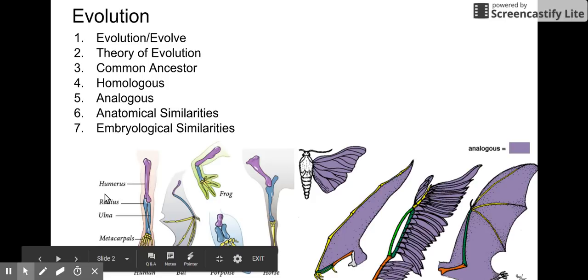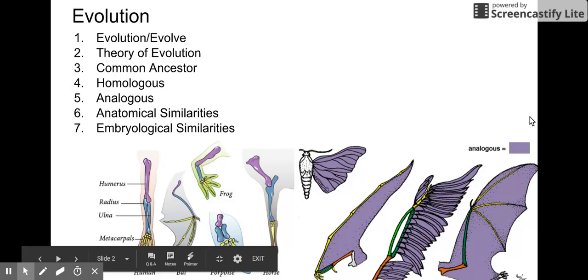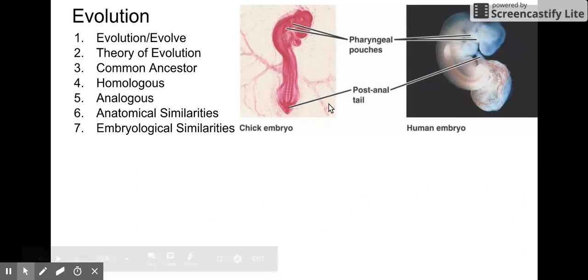Homologous structures, you're going to have that similar anatomy, and that similar anatomy is going to point to a common ancestor. So the anatomical similarities, those are going to go with homologous structures. Anatomical similarities are going to be a common ancestor idea.